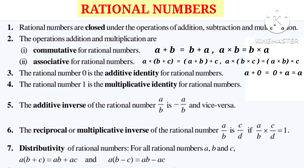The rational number 1 is the multiplicative identity for Rational Numbers. That is, if we take A, a rational number, then A into 1 is equal to 1 into A is equal to A.